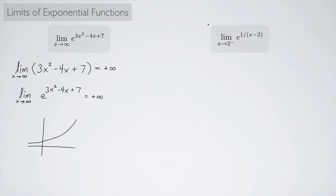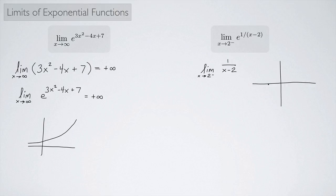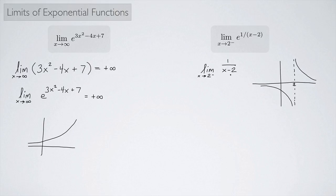Let's look at another example: the limit as x approaches 2 from the left of e to the 1 over x minus 2. I'm going to look at the exponent — the limit as x approaches 2 from the left of 1 over x minus 2. Taking a graphical approach, this function has a vertical asymptote at x equals 2. For x values less than 2, the expression is negative, so the graph goes to negative infinity from the left. As we approach 2 from the left, we get negative infinity.